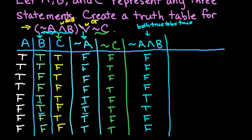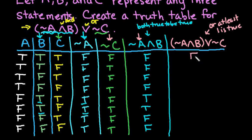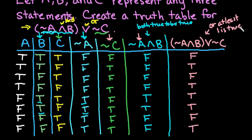For the last column, I put it all together: not A and B, or not C. I use the grouped column and the not C column. For 'or,' at least one must be true. False with false — false. True with false — true. False with false — false. True, true — true. True followed by false — true. And once you get to a column that represents the entire statement you were given, you are finished with your truth table.